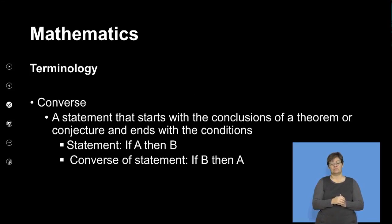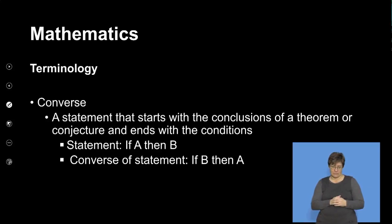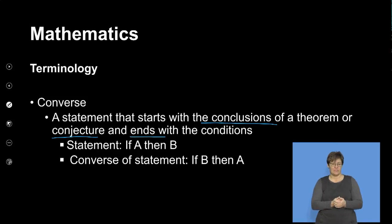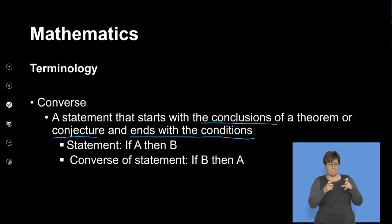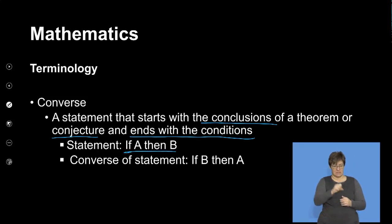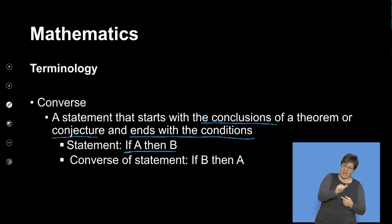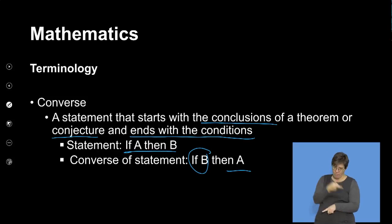Also, the converse of this — remember a converse is when you start with the conclusion. If A is true then B is true. A converse starts with the conclusion of a theorem or conjecture and tries to end with the conditions that made that conclusion true. If two triangles are congruent, then these are the conditions. That's what we mean by a converse: if A then B is the statement; the converse is if B is true, then A is true.